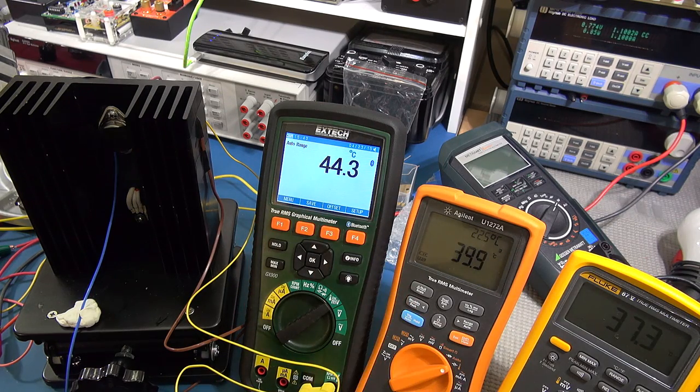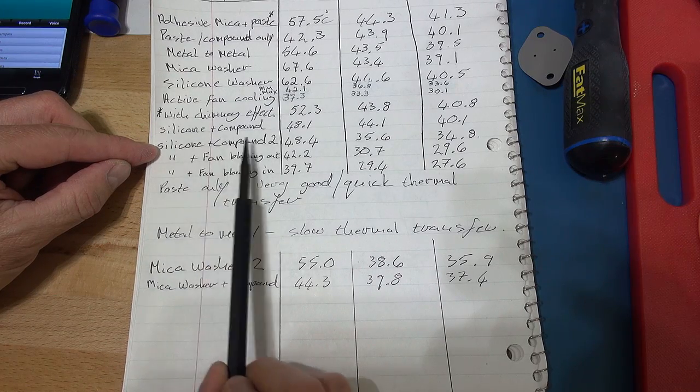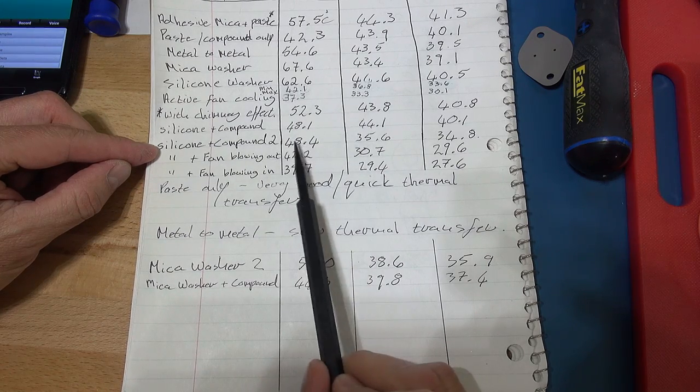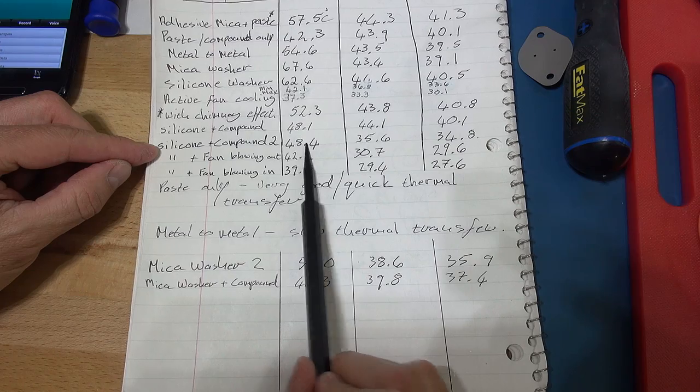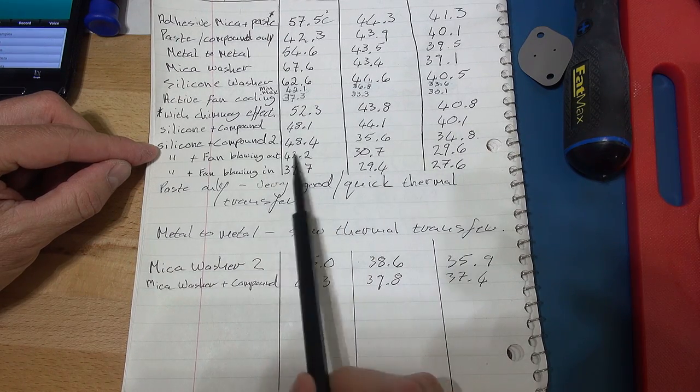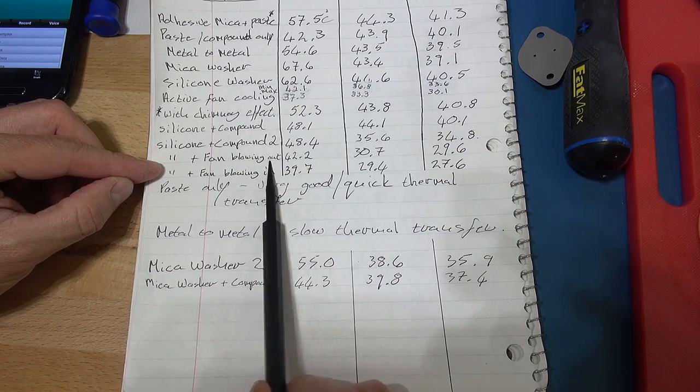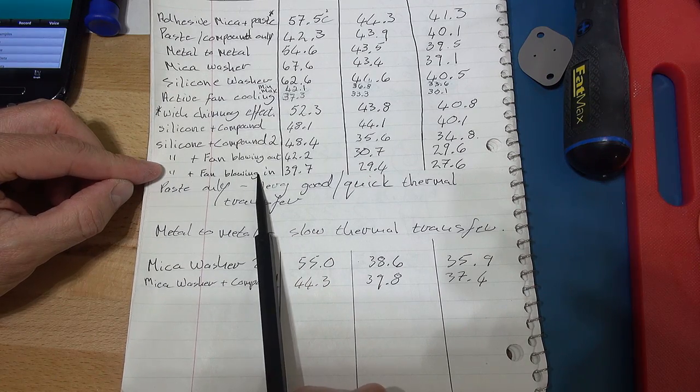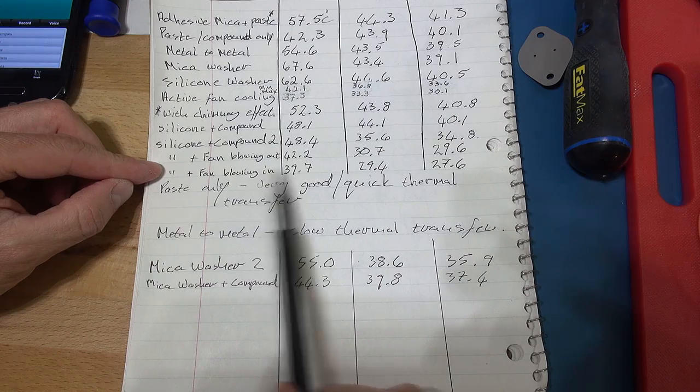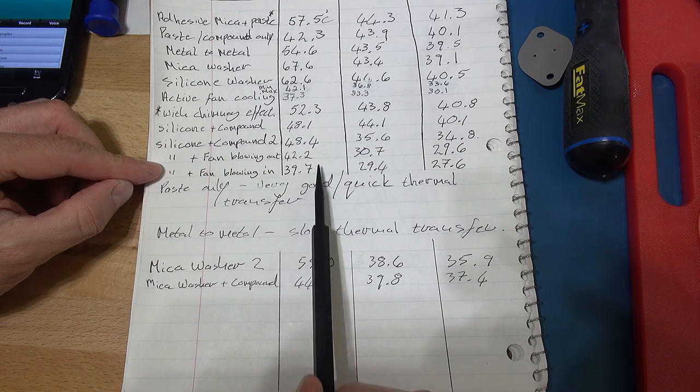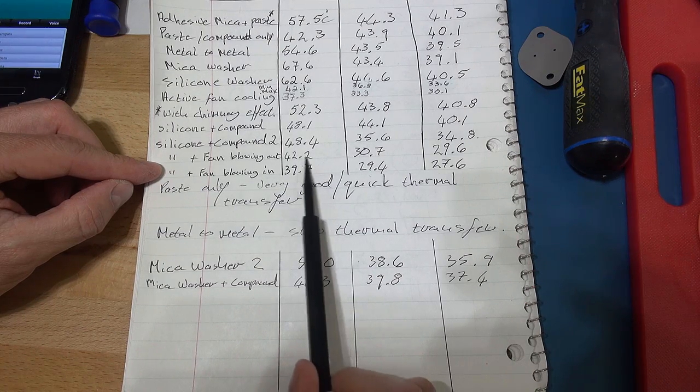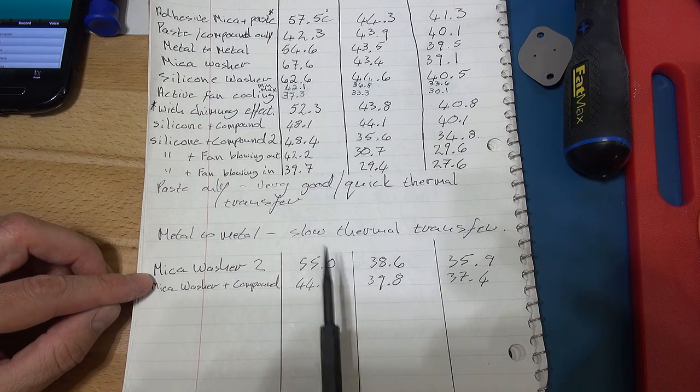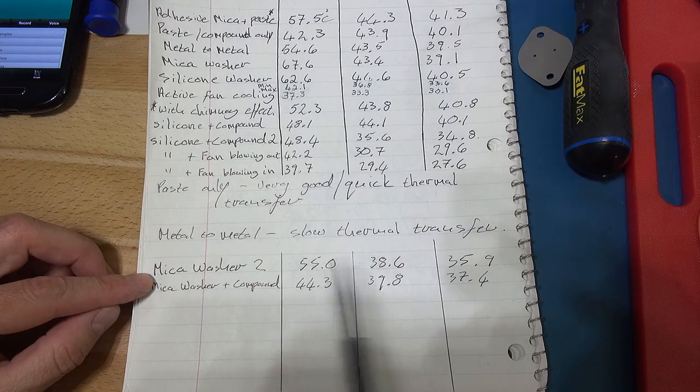Just to summarize, this is where we started testing today with the same setup we left off last time—silicon compound. This is the second reading I set up so we were roughly around the same temperature—that's where it settled in as a reference. We then used the fan blowing out—it dropped from 48.4 to 42.2. With it blowing in on the TO-3 package power transistor, it dropped to 39.7. So blowing in, that was certainly something I wasn't expecting and you guys asked me to try, so that certainly worked out.